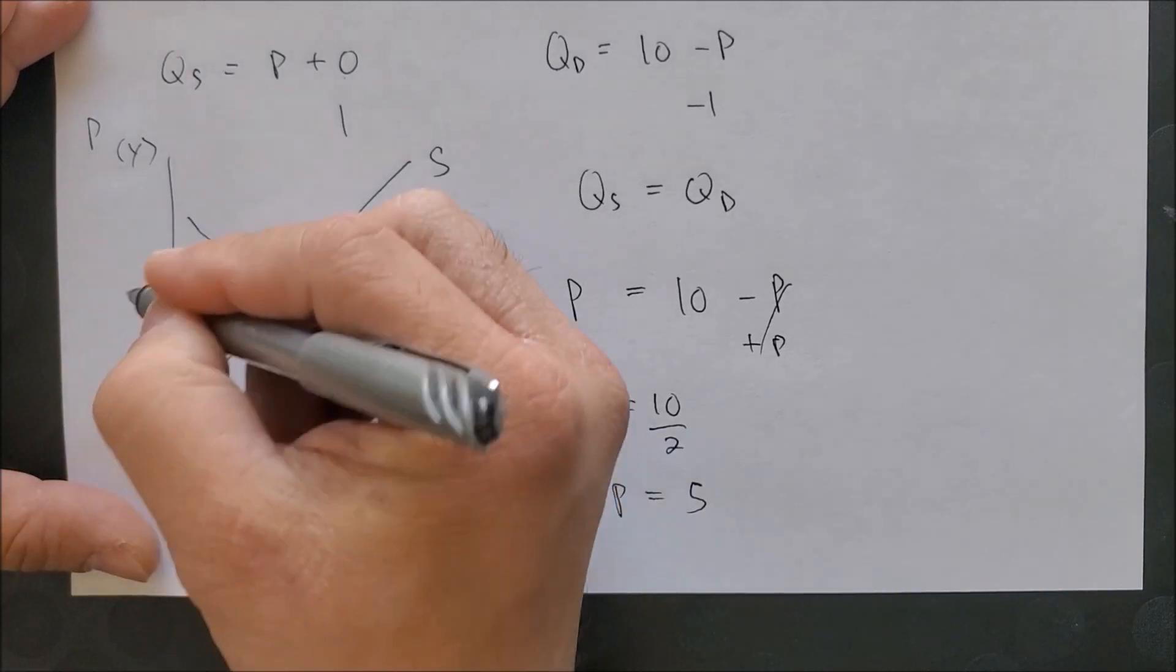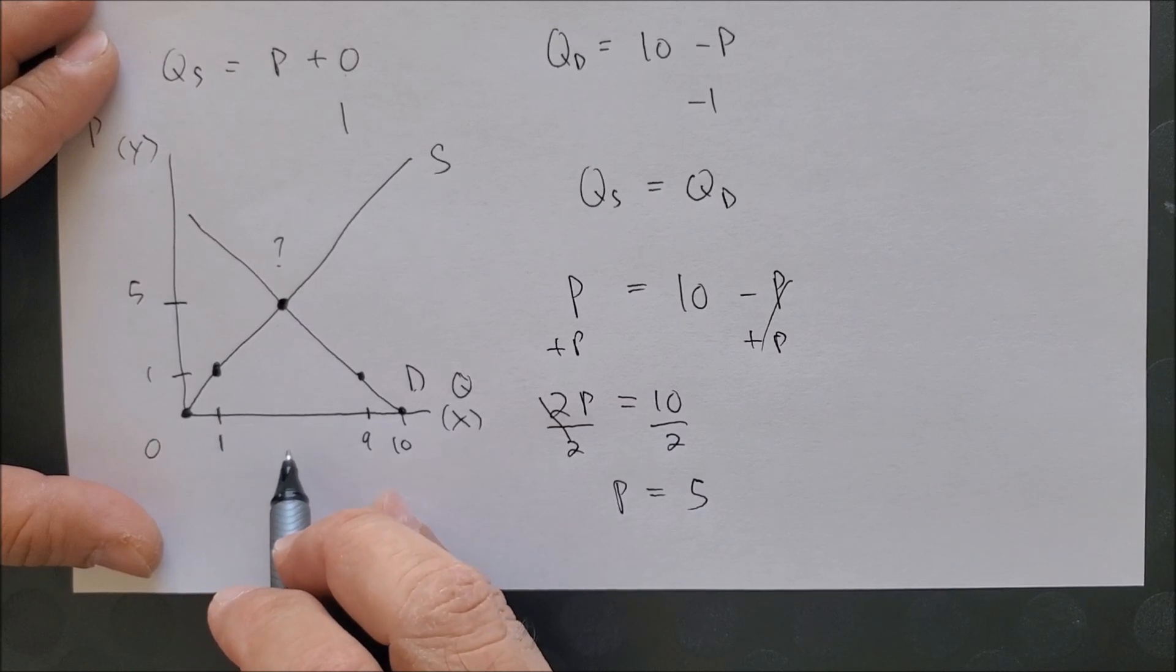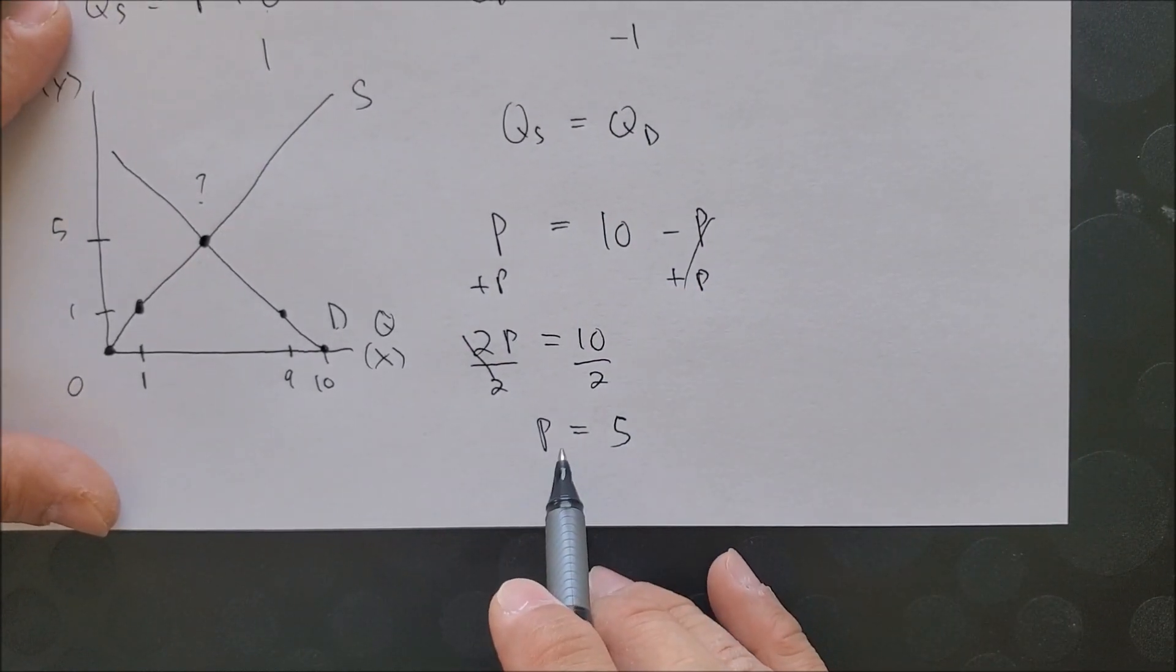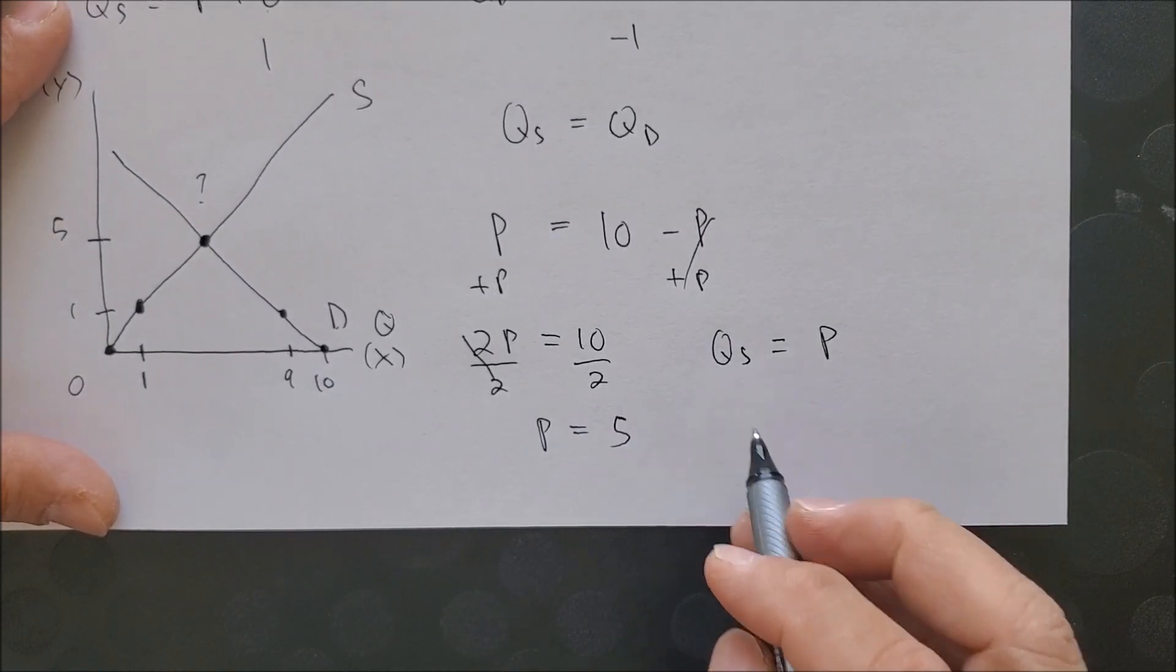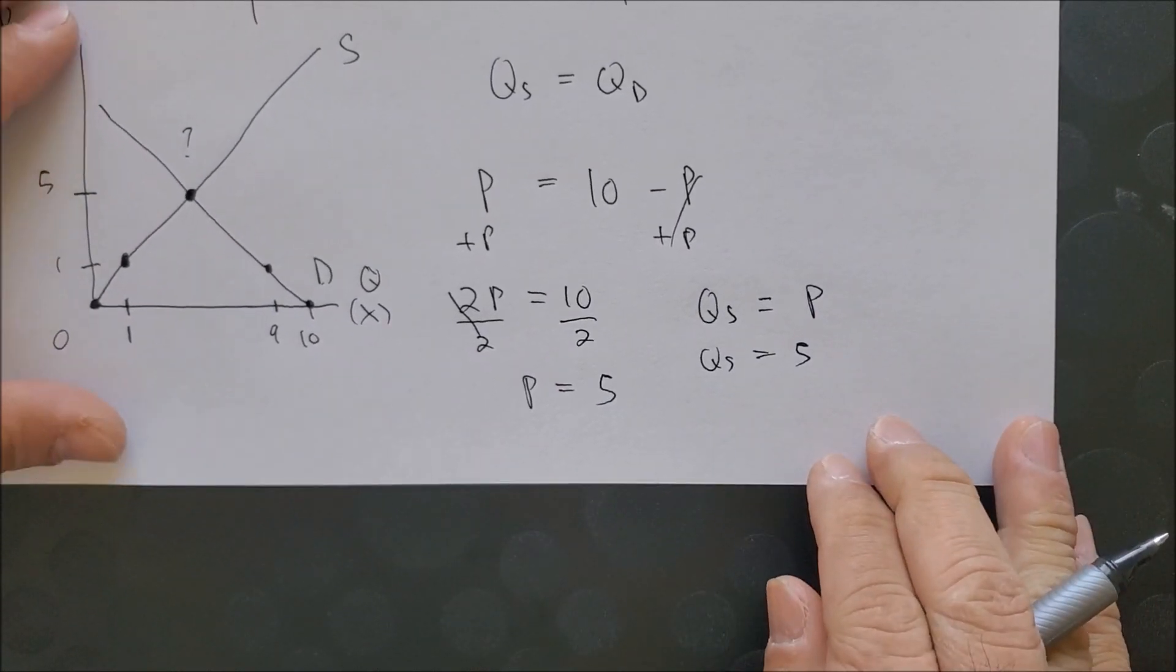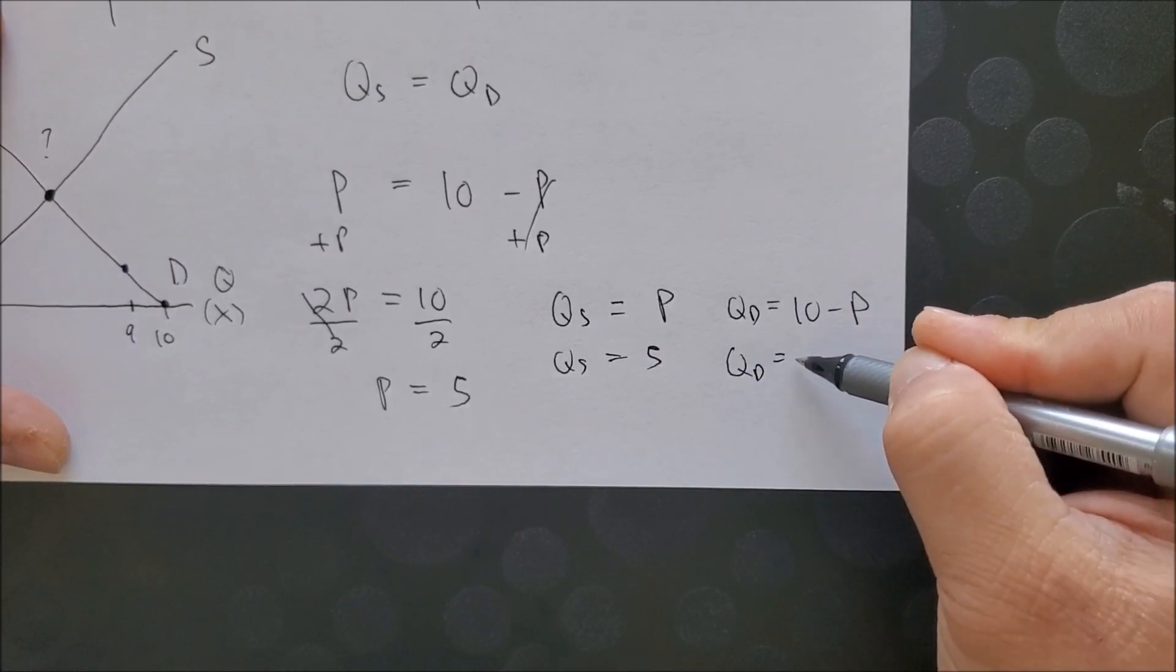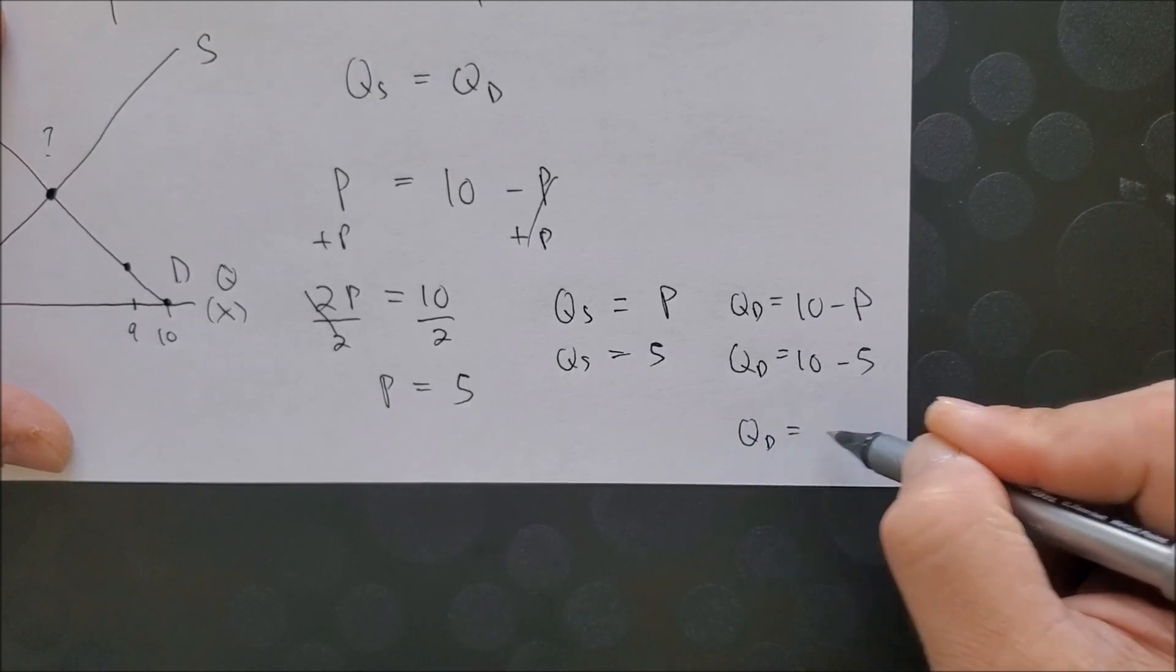Now what about the quantity? We can put P in any of these two equations. Let's put P in Q_s: Q_s equals P, so Q_s must equal 5. Or Q sub d: 10 minus P. Q sub d equals 10 minus 5, which would be 5. Quantity is 5.